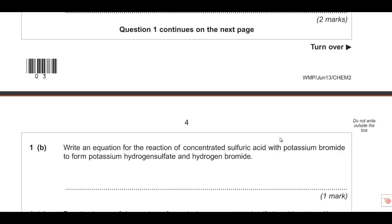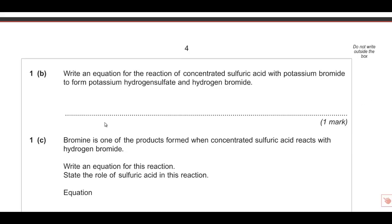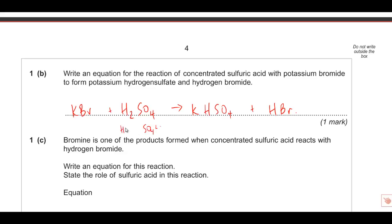Writing an equation for concentrated sulfuric acid with potassium bromide to form potassium hydrogen sulfate and hydrogen bromide: potassium bromide is KBr, sulfuric acid is H2SO4. Potassium hydrogen sulfate is KHSO4, and hydrogen bromide is HBr. You can work out the formula using charges - SO4 2- with H+ gives H2SO4, while HSO4- with K+ gives KHSO4. If you really struggle with this, don't spend too long as it's only one mark.